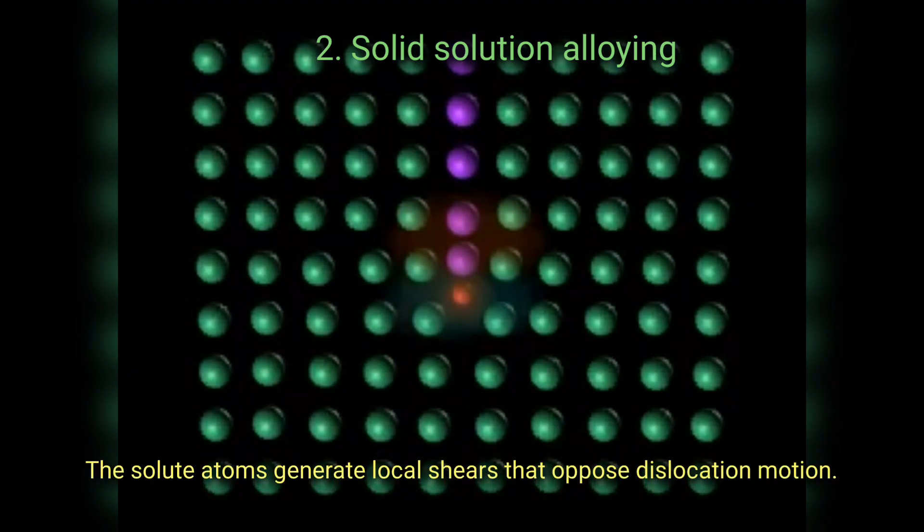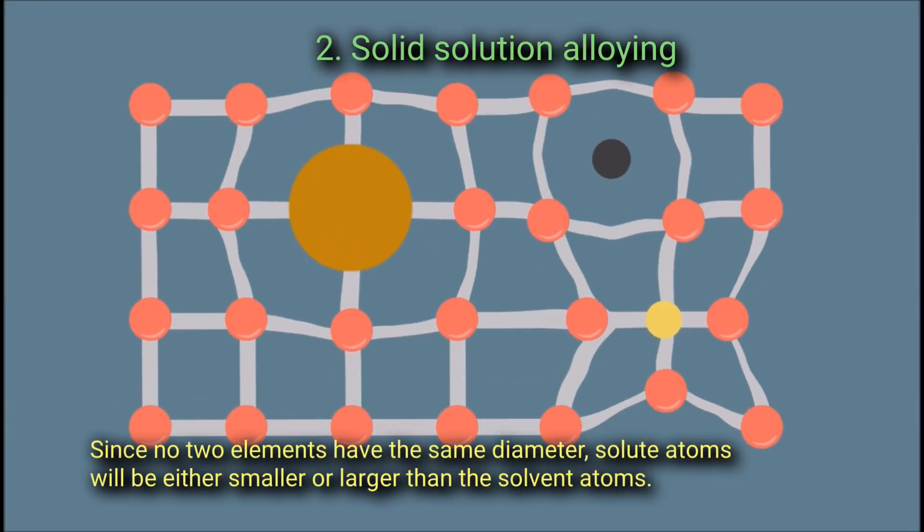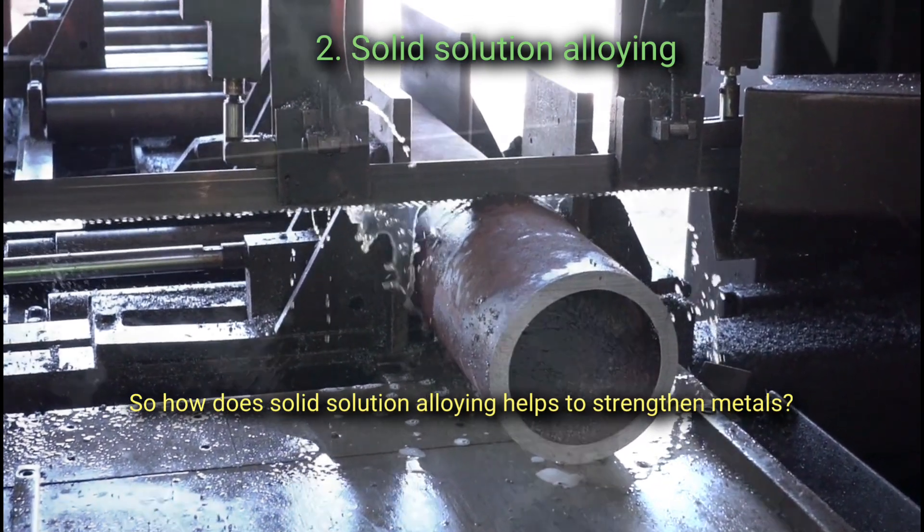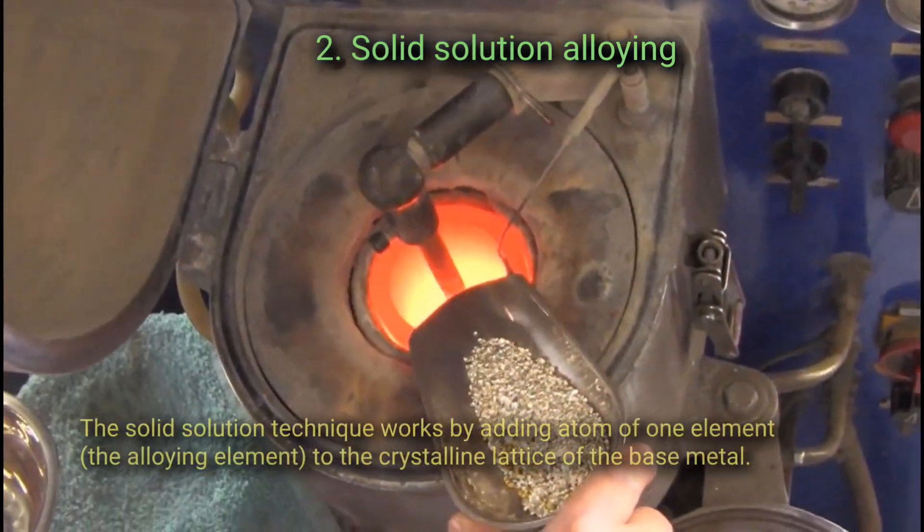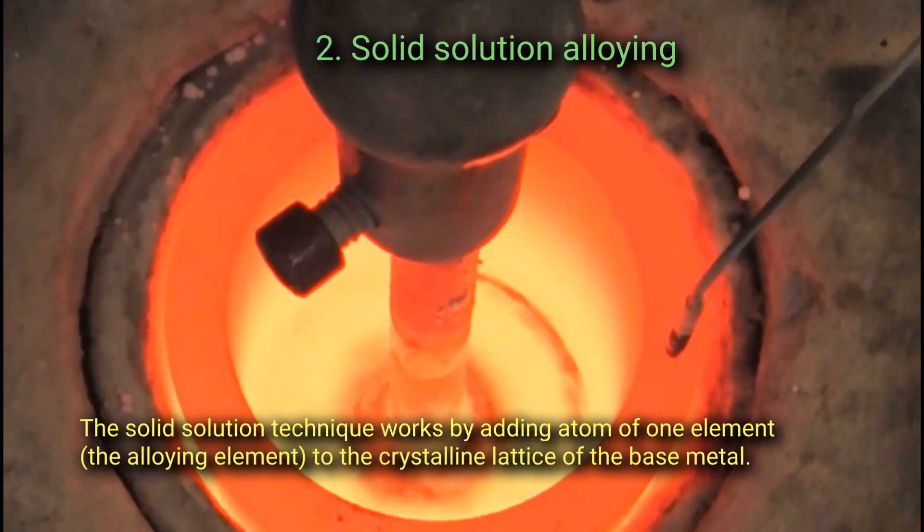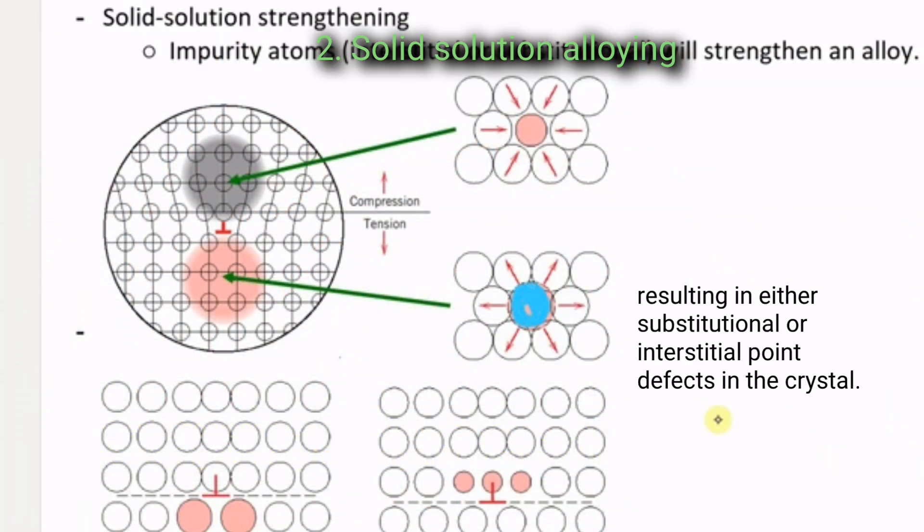The solute atoms generate local shears that oppose dislocation motion. Since no two elements have the same atomic diameter, solute atoms will be either smaller or larger than the solvent atoms. So how does solid solution alloying help to strengthen metals? The solid solution technique works by adding atoms of one element, the alloying element, to the crystalline lattice of the base metals, resulting in either substitutional or interstitial point defect in the crystal.